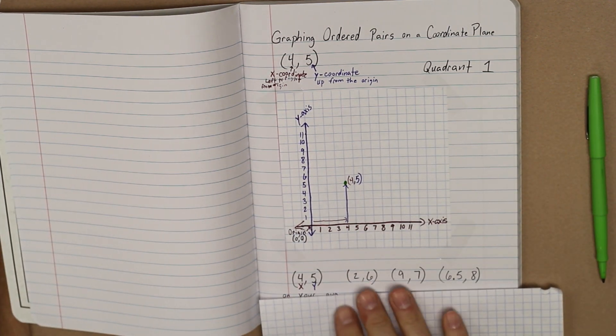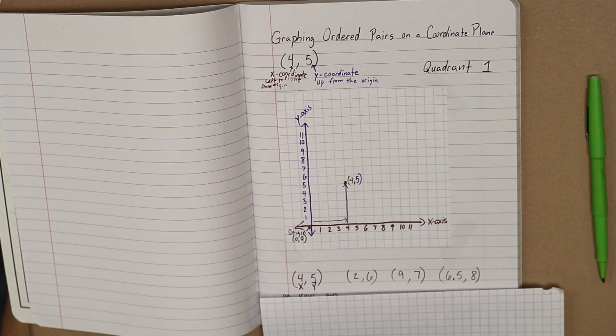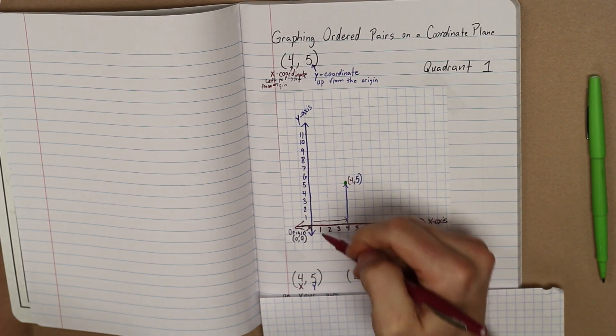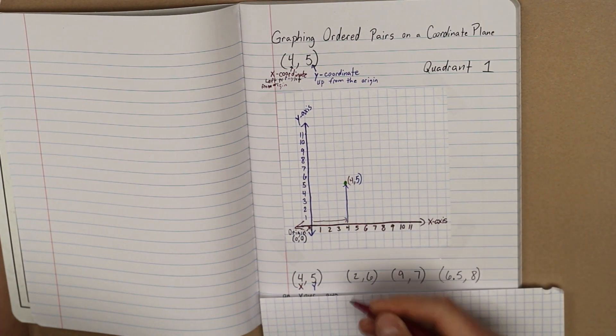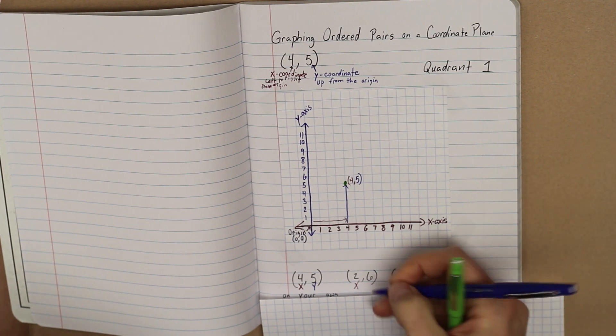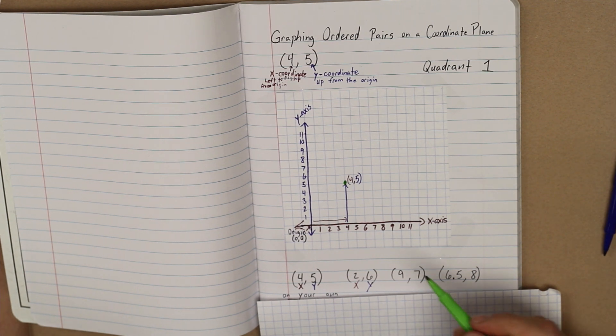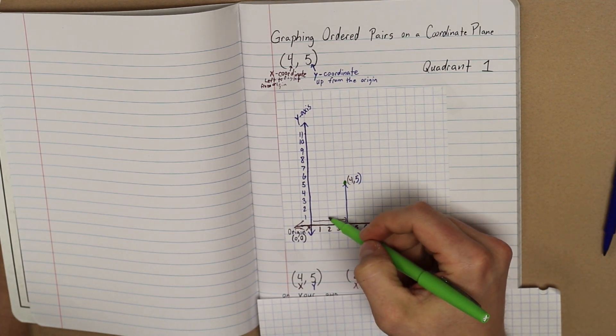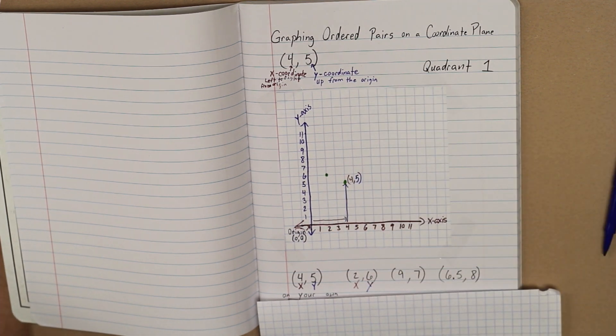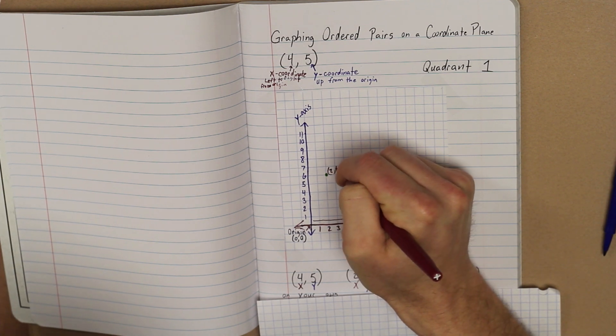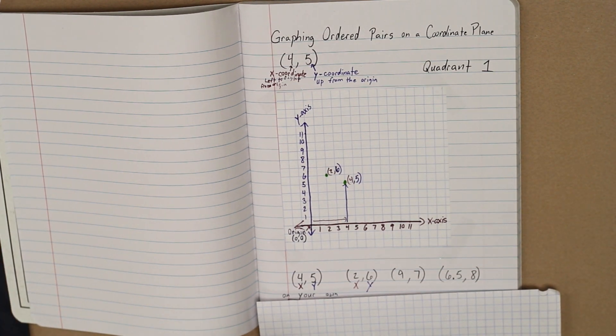Let's do another one. Let's see if you can try this one on your own. Go ahead and try 2, 6. So we're going to go over two, and then we're going to go up six. Because this is our x, and six is our y. We're going to go over two, up six: one, two, three, four, five, six. So we end up with a dot there, 2, comma, and our y, 6. So how'd you do? Did you get it?